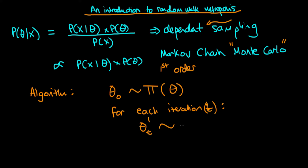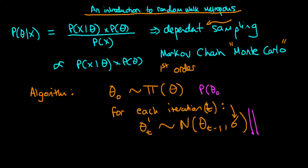Theta t primed is drawn from a symmetric distribution centered on our current location — typically a normal distribution centered on our previous sampled value, with some standard deviation that we set manually. It doesn't have to be a normal distribution, but in the random walk metropolis algorithm this proposal distribution, sometimes called the jumping distribution, must satisfy the property that the probability density of jumping from theta a to theta b equals that of going from theta b to theta a. The normal distribution satisfies this condition, making it the common choice.